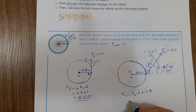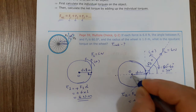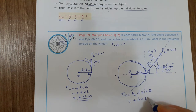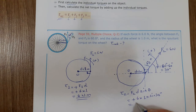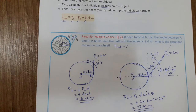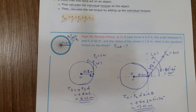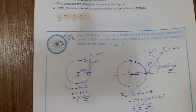So torque 2 is positive. F2 = 6 Newton, distance = 1 meter, sine 30 = 1/2, giving positive 3 Newton·meter. There are two forces — F1 produces +6 Nm and F2 produces +3 Nm. The net torque is 6 + 3 = 9 Newton·meter.